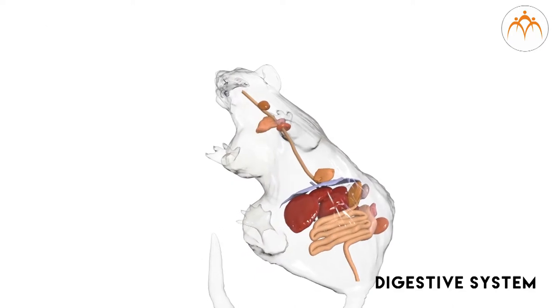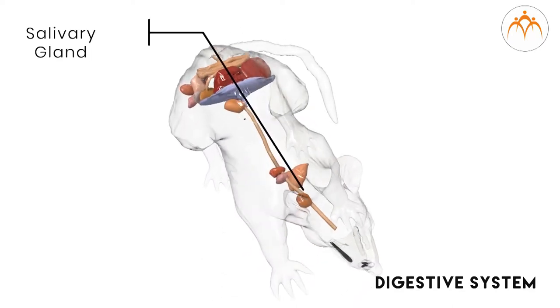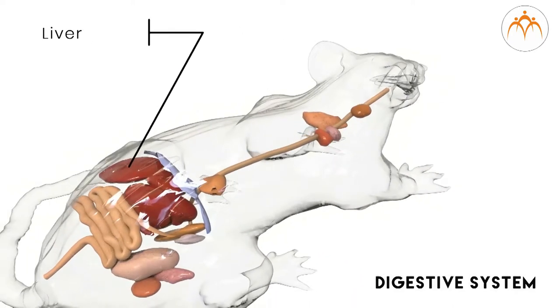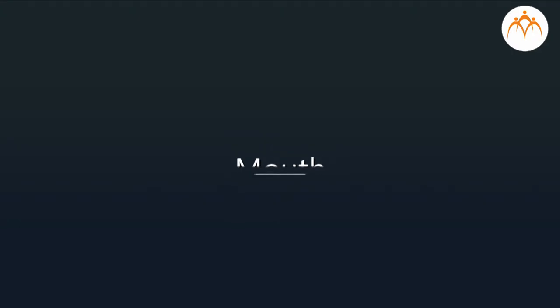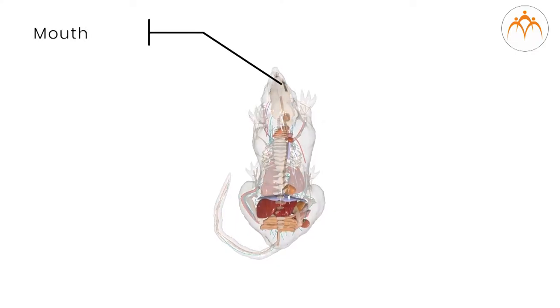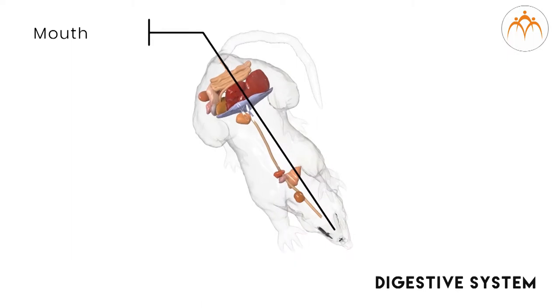Along with these organs, there are glands which include salivary glands, liver, and pancreas. Now I will tell you a little about each organ. The mouth is the opening through which food is taken. Inside the mouth, there is a mouth cavity with tongue, teeth, and salivary glands.